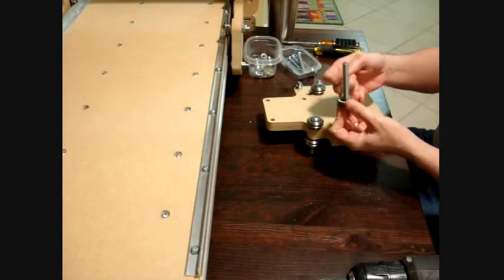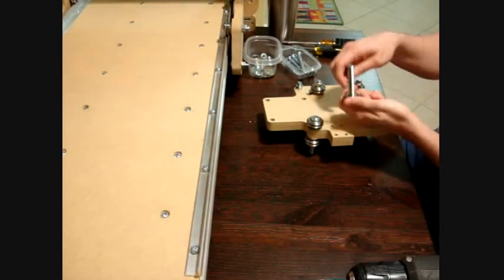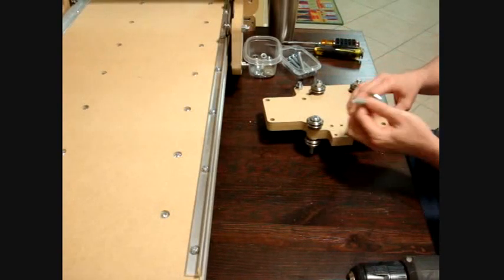Now for the very last bearing, again we have the screw, the bearing, this very thin washer, the medium washer, and then the large one.